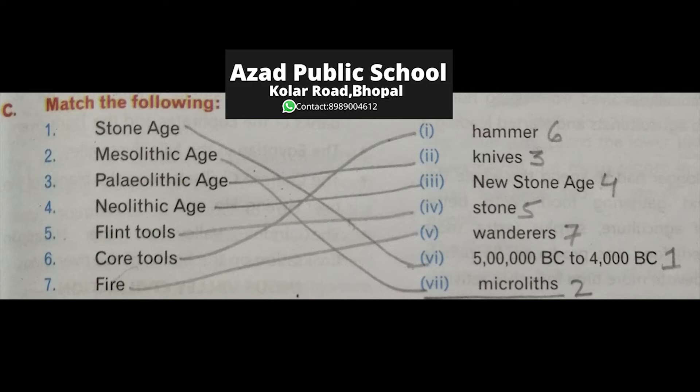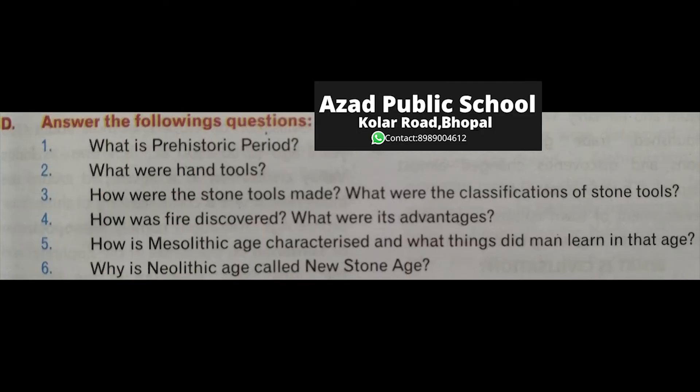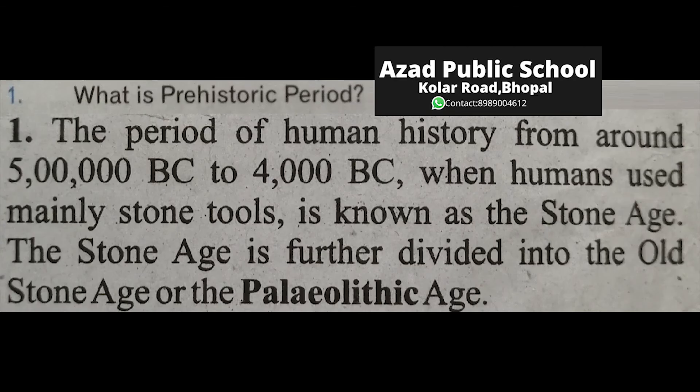Answer the following questions. What is the prehistoric period? Answer: the period of human history from around 5 lakh BC to 4,000 BC when humans used mainly stone tools — matlab aisa waqt jab insan sirf patthar ka istamal karta tha — is known as the Stone Age.